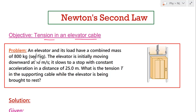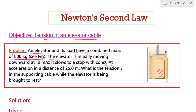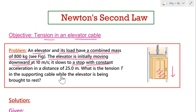The problem says: an elevator and its load have a combined mass of 800 kg. The elevator is initially moving downward at a speed of 10 meters per second. It slows to a stop with constant acceleration over a distance of 25 meters. So the elevator covers 25 meters before coming to rest, meaning the cable must apply some tension force to bring it to a stop.